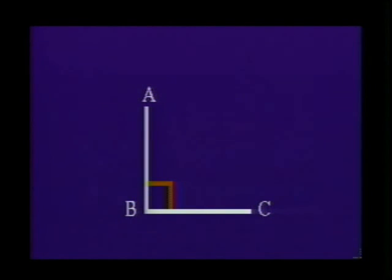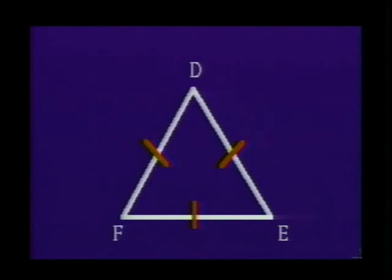Specific markings can be placed on drawings to indicate information about the figure. For instance, in triangle ABC, this symbol was used to indicate a right angle. In triangle DEF, the congruent sides were identified using this mark, and congruent angles were marked like this.